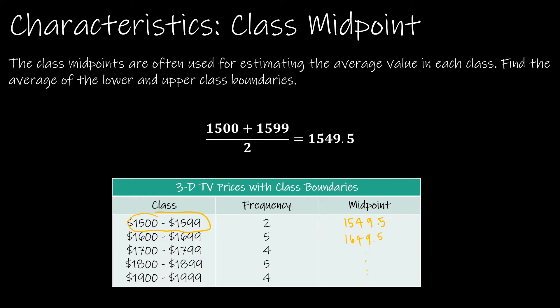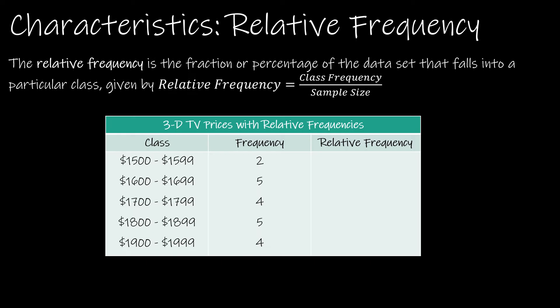The midpoint represents the average value of each class and is the mathematical average of the class limits. It is useful and often in Hawkes Learning they will ask you to find the midpoint or even create your frequency table using midpoints. Then there's the relative frequency, which you'll use quite often. The relative frequency is the class frequency relative to the total number of values — you divide the class frequency f by the sample size n, where n is the sum of all frequencies: 2 + 5 + 4 + 5 + 4 = 20.